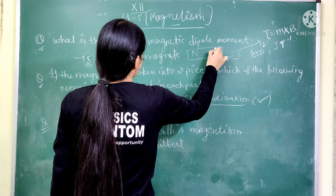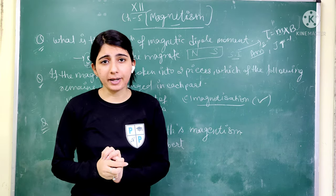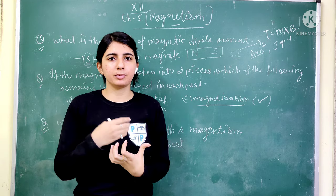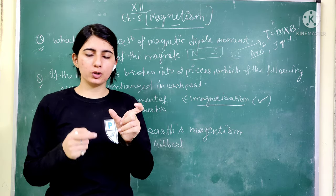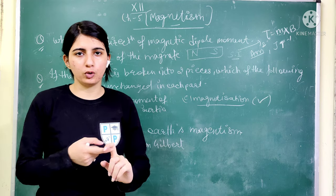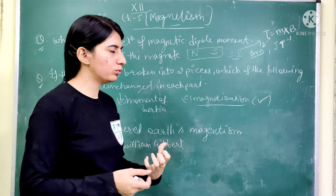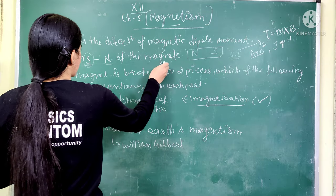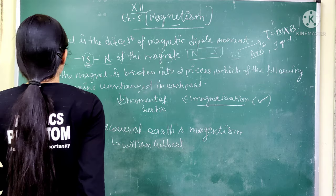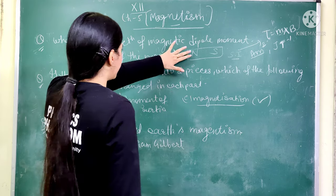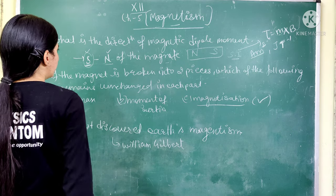Like all magnets, it has a north pole and a south pole. When we consider the bar magnet, it has two poles — one north pole and one south pole. The magnetic dipole moment goes from the south pole to the north pole of the magnet.